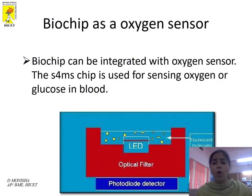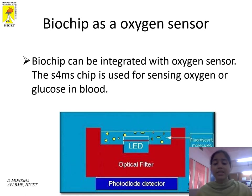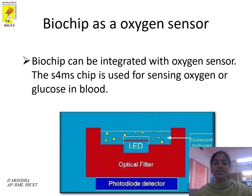Biochip as an oxygen sensor: The biochip can be integrated with an oxygen sensor. Components include photo diode detectors, optical filter, LCD, and LED. Fluorescent molecules are merged or sandwiched in the biochip to monitor or sense the glucose and oxygen level in blood.